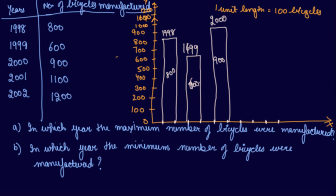Then in 2001, 1100 bicycles were produced. So 1100 comes here after 1000. So in 2001, 1100 bicycles were produced. This is 2001, 1100 bicycles are produced.